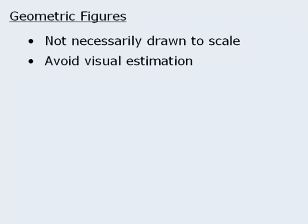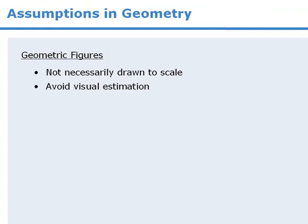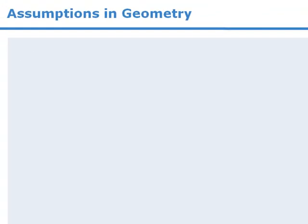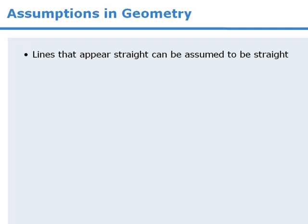Alright, that concludes this lesson on assumptions in geometry. Let's summarize. In this lesson, we learned that lines that appear to be straight can be assumed to be straight. All angles shown must be greater than zero degrees.